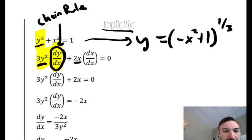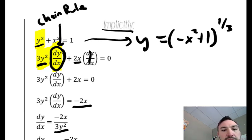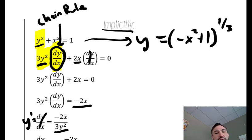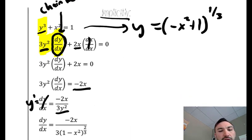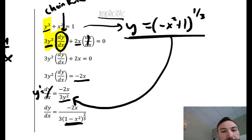Since dx/dx is like 1, 2x times 1 is still 2x. Then you can see we subtract the 2x over, divide both sides by 3y squared. If I didn't have this dy/dx, then I'm not solving for the derivative — I would have nowhere to solve for it. So the derivative is negative 2x over 3y squared. Sometimes you need to get this all in terms of x, so you'd go back and plug in what y was. That's just a different way to find that derivative.